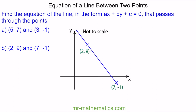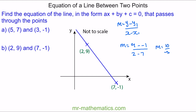I've made a quick sketch of a straight line and we're going to begin by working out the gradient. So m is the change in y — y minus y1 over x minus x1. We know the y values are 9 and negative 1, and the x values are 2 and 7. So the gradient is 10 divided by negative 5, which is negative 2.